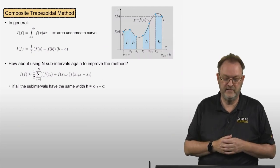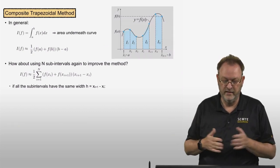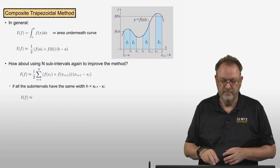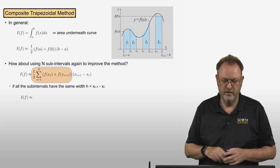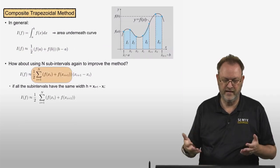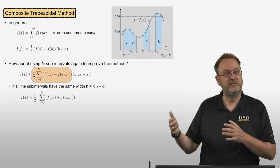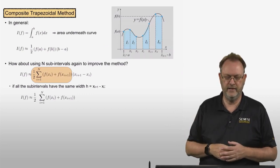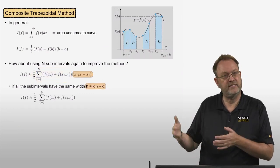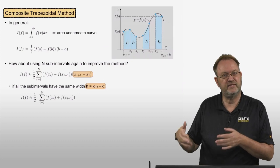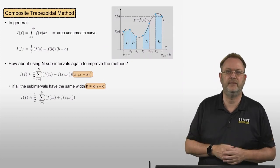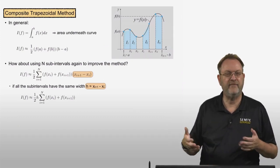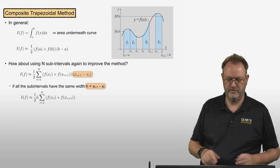If all subintervals have the same width h, we can factor h out of each summation term, giving: one-half times h times the sum from i=1 to n of (f(xi) + f(x_{i+1})). Written this way, we need two function evaluations per subinterval.